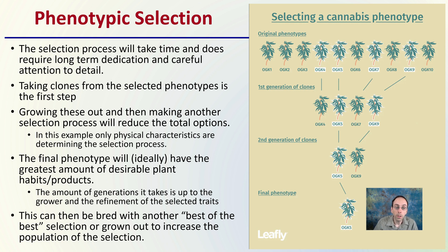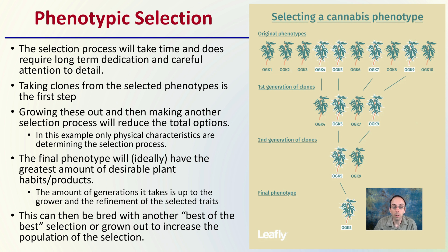The final phenotype will, at least ideally, have the greatest amount of desirable plant habits, products, or whatever traits the grower is looking for. The number of generations this takes is up to the grower and the refinement of the selected traits — some might be done in fewer generations, some might take more. This can then be bred into another best-of-the-best selection or grown out to increase the population of that particular phenotype.